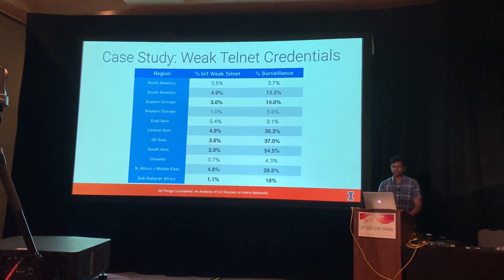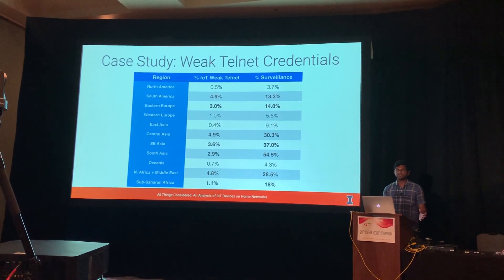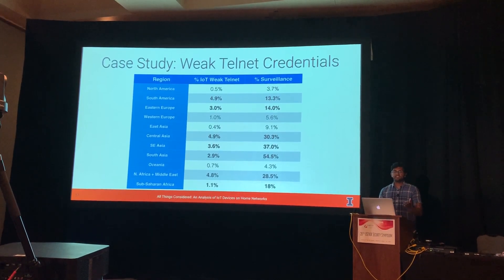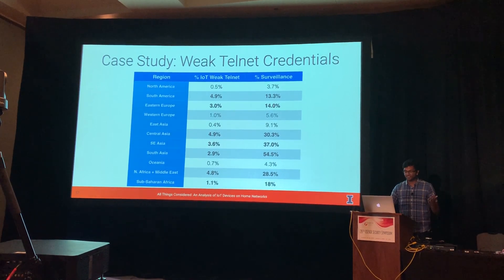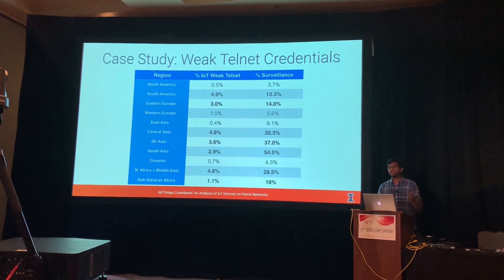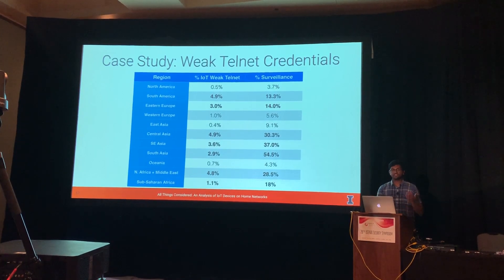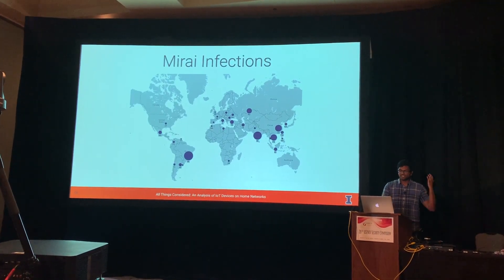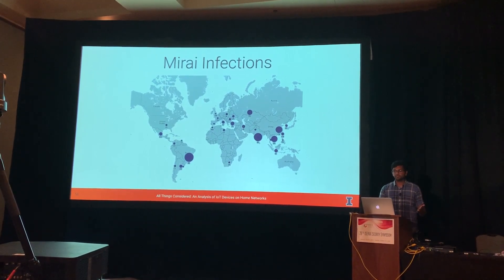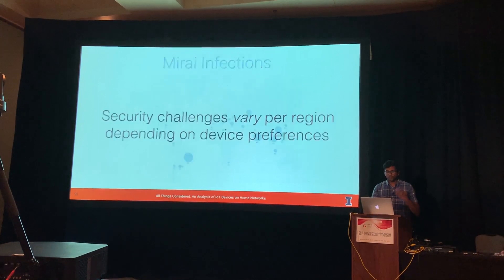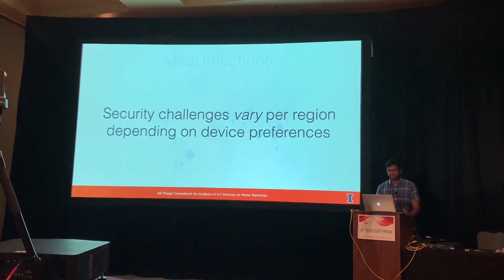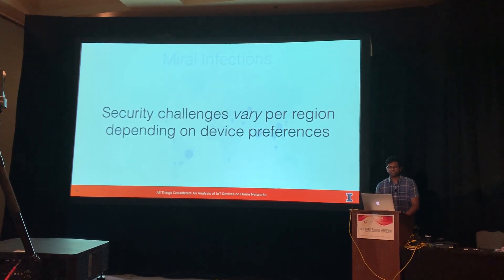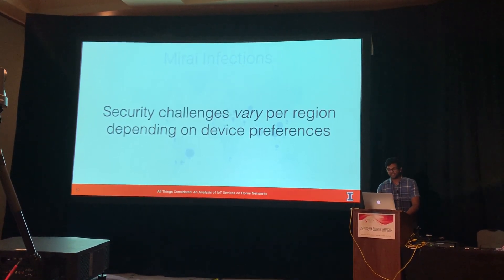A darker implication is that there are regions at disproportionately higher security risk simply because of the kinds of devices they purchase. This matters because we exist on the global Internet — if an attacker gets a bot in South America, they're going to use it to attack services globally. Just think back to the initial Mirai attacks from 2016, where infections and scanners appeared globally. Broadly, security challenges vary by region depending on device preferences, indicating another complication in a growing, heterogeneous IoT ecosystem.